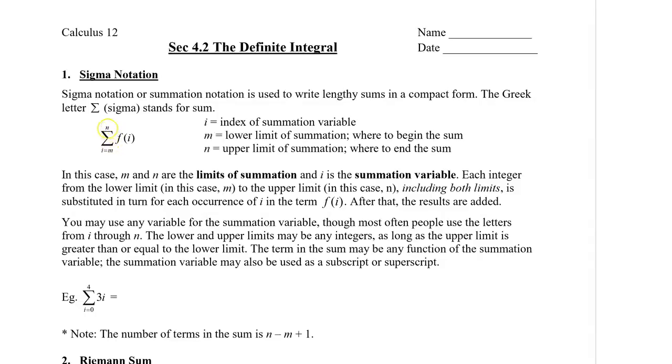Above the sigma notation is the n, and that's the upper limit of summation, and this is where the sum will end. So what happens is that each integer from the lower limit, in this case m, to the upper limit, which is n, including those numbers, is substituted in turn for each occurrence of i into the term f of i. And then after that, the results are added, hence it is the sum.